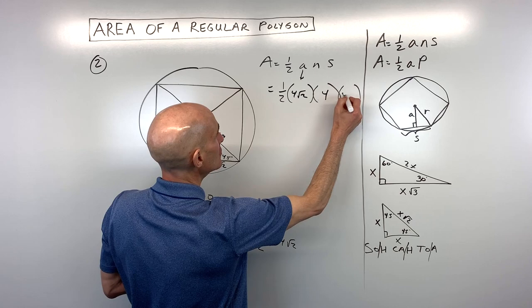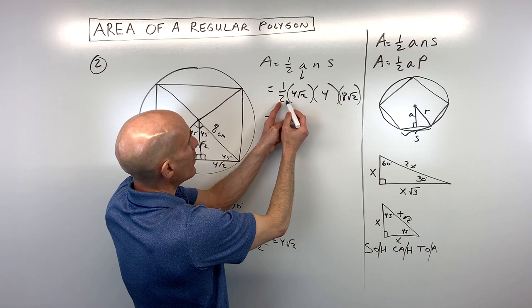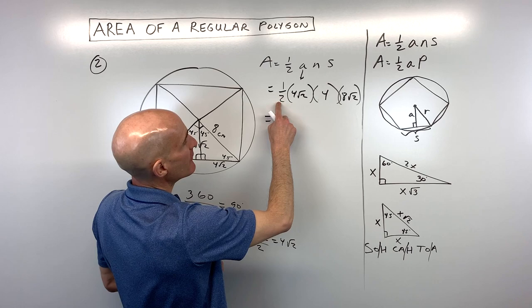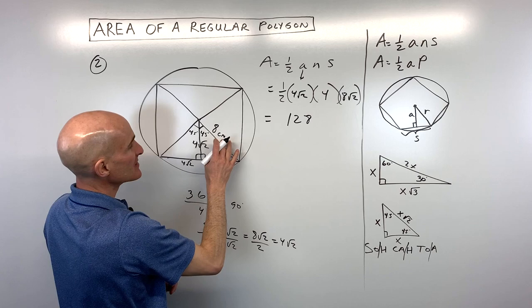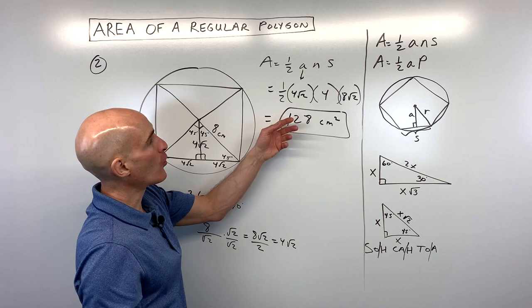Plugging into our formula: 4 root 2 (apothem) times 4 (number of sides) times 8 root 2 (side length) times one-half. Doing the arithmetic: 4 times 4 is 16, times one-half is 8, times 8 is 64, times square root of 2 times square root of 2 equals 2, so 64 times 2 is 128. The area is 128 centimeters squared.